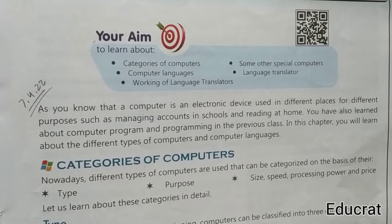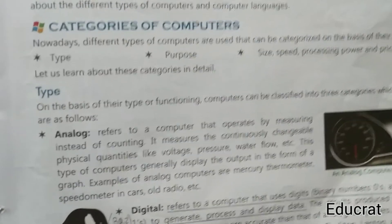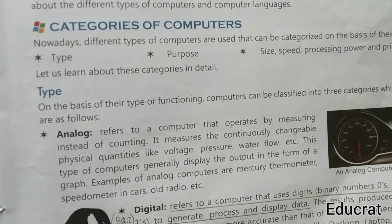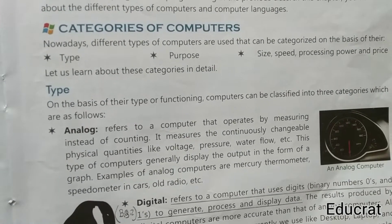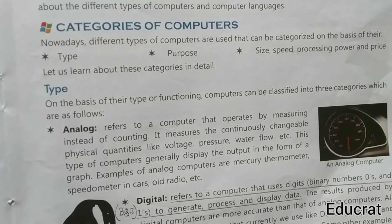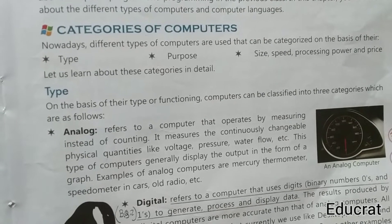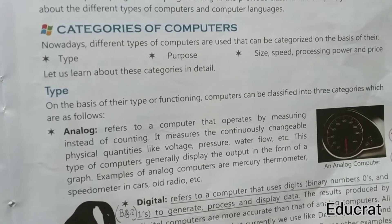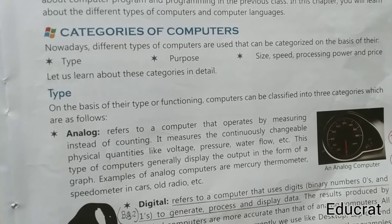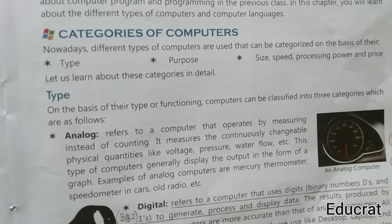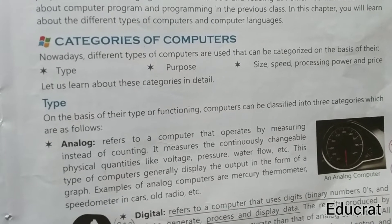We have also learned about computer programs and computer programming. Nowadays, different types of computers are used that can be categorized on the basis of their type, purpose, size, speed, processing power, and price. We will be looking at three different types of computers: analog, digital, and hybrid.